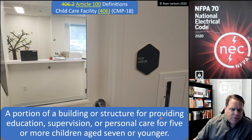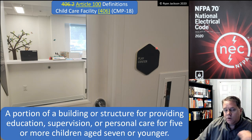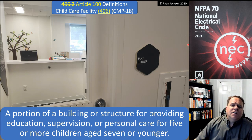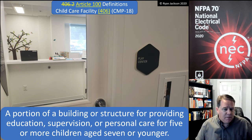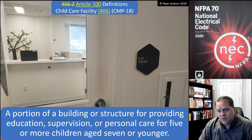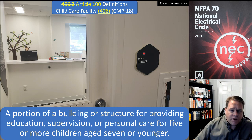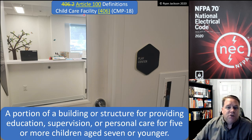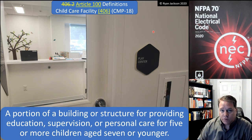Right now, if you want to know the definition of "child care facility," you would go to Article 406, because that's the only place that term is used — in 406.12 for tamper-resistant receptacles, which requires receptacles in child care facilities to be listed as tamper resistant. In the 2023 code, it will all be in Article 100, but they'll also have a parenthetical reference — so it'll say "child care facility" with "406" in parentheses, meaning it's only to be used in Article 406.